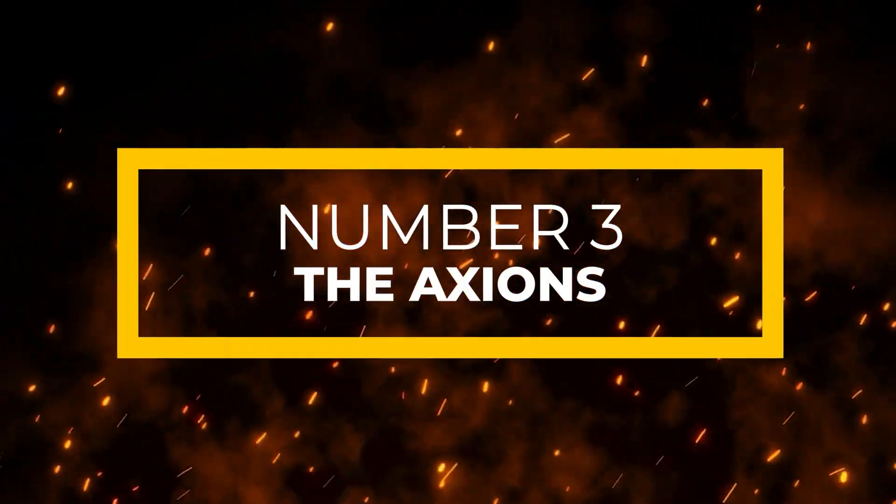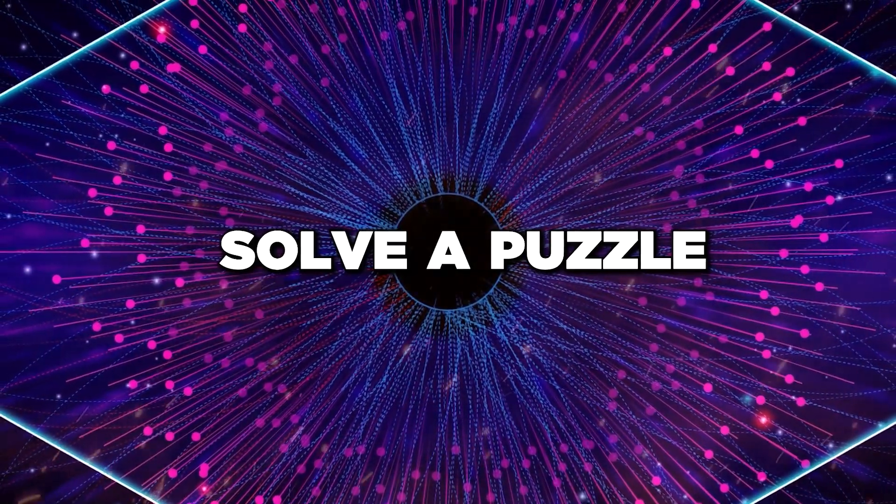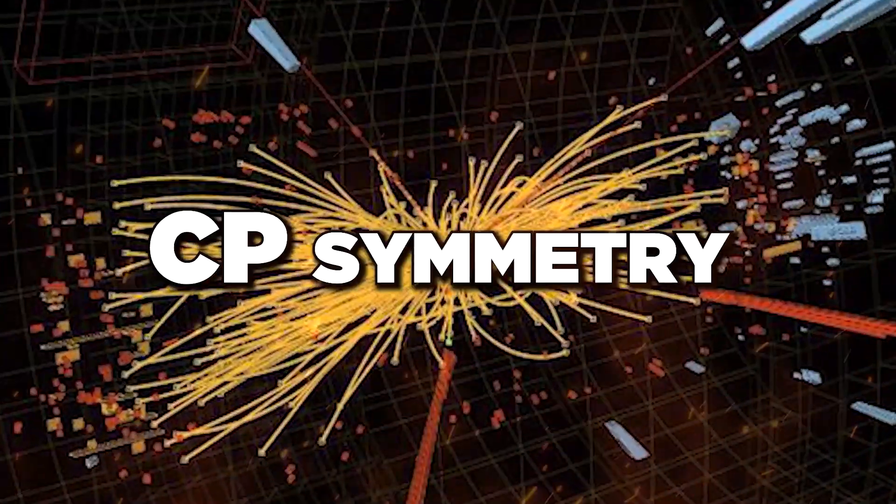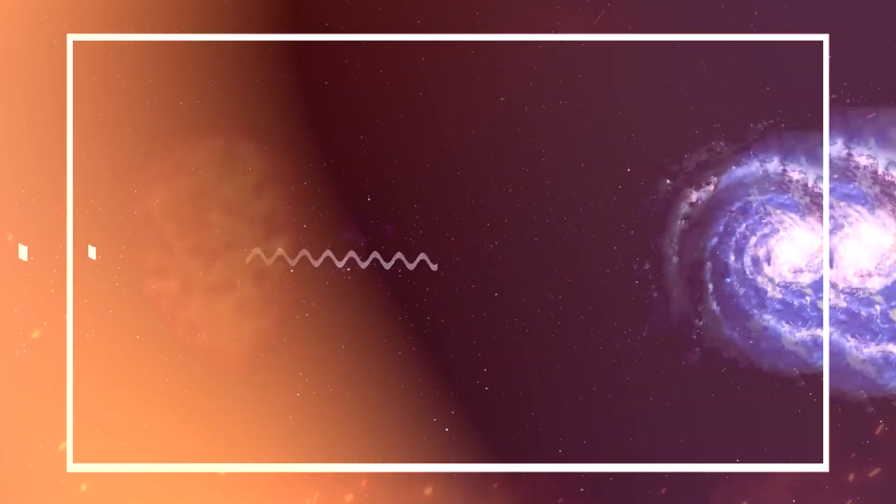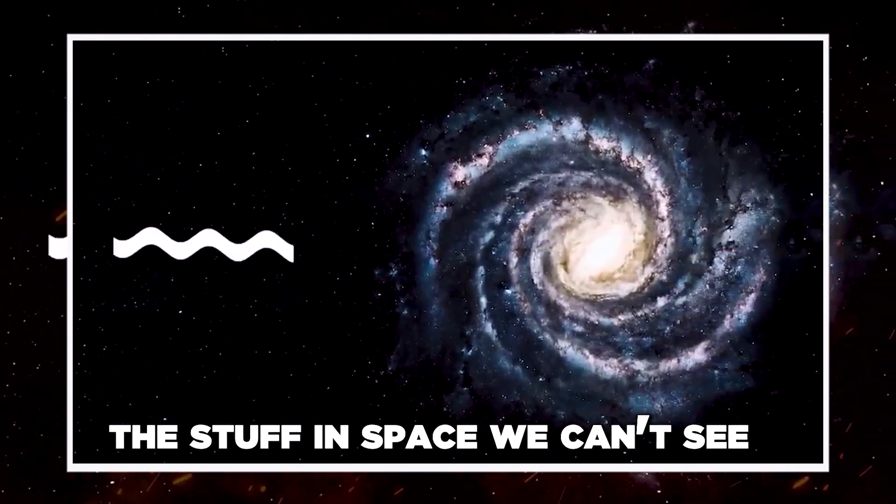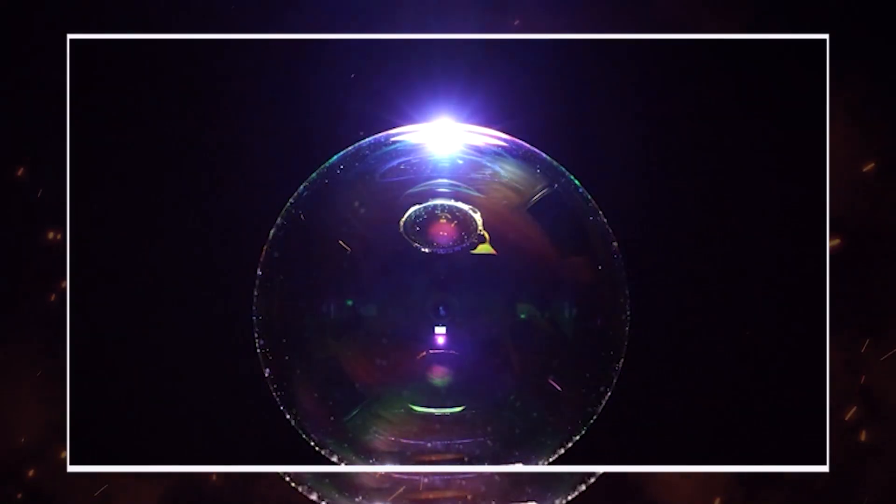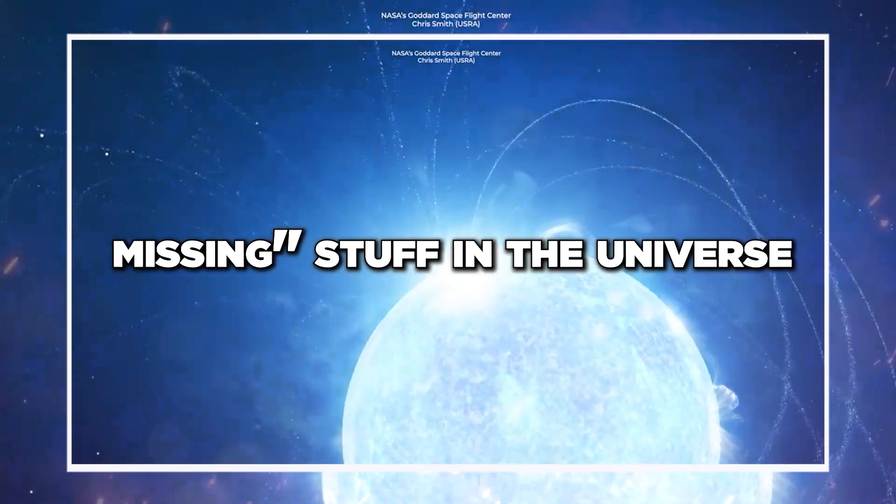Number 3. The Axions. Axions are like magic particles that scientists came up with to solve a puzzle. In 1977, they found something weird. Particles were not breaking a rule called CP symmetry like they were supposed to. So they thought of axions which might actually make up dark matter, the stuff in space we can't see. These tiny, almost ghost-like particles could be everywhere, left over from the Big Bang. We haven't found them for real yet, but if we do, it could help us understand why there's so much missing stuff in the universe.